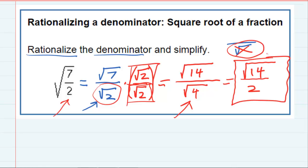So our final answer is just going to be the square root of 14 over 2. The fact that there's a square root in the top isn't a problem. It's just the denominator that is not supposed to have the square root.